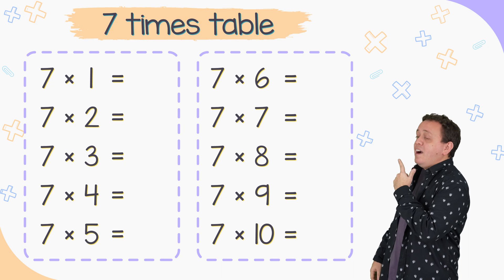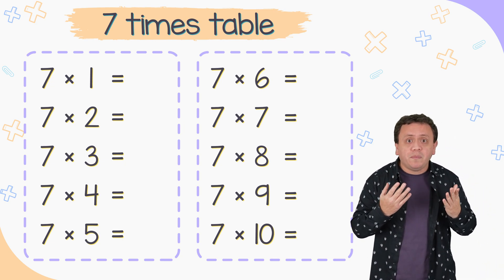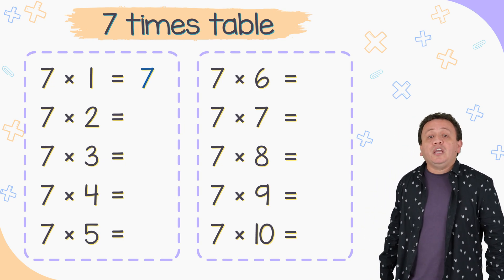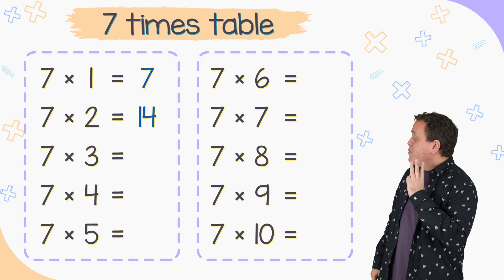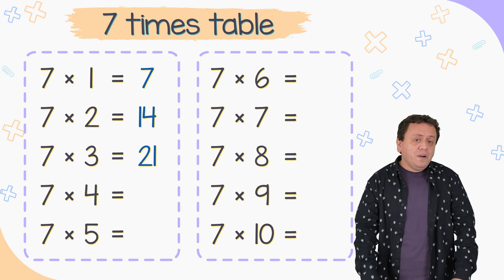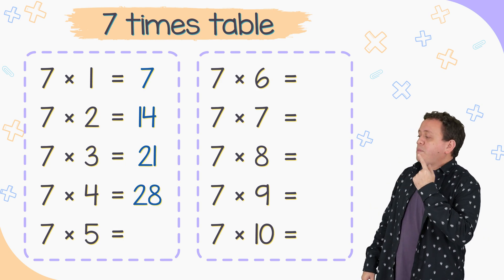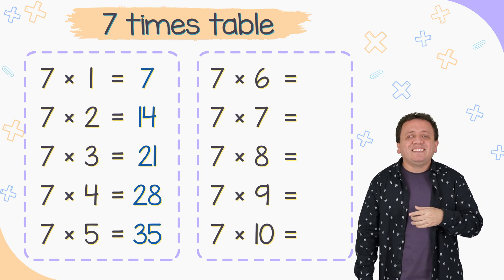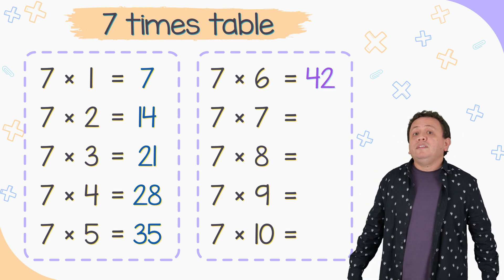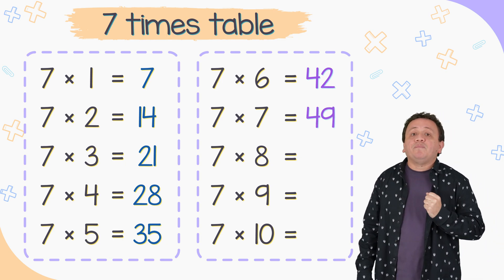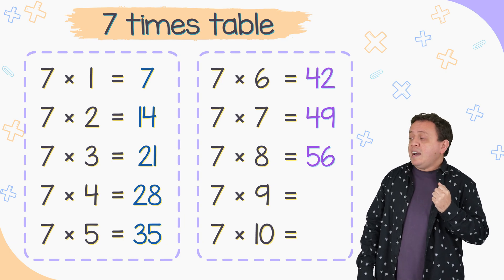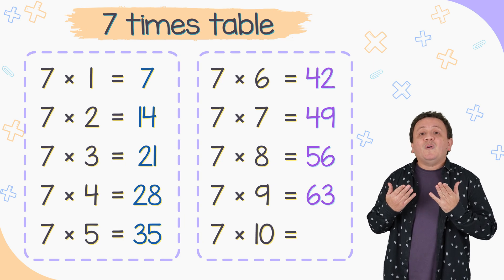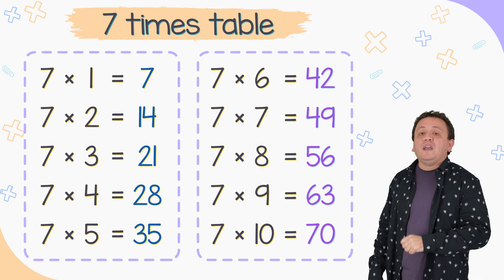My students always say that this is the hardest multiplication table. Pay attention to the 7 times table. 7 times 1 equals 7. 7 times 2 equals 14. 7 times 3 equals 21. 7 times 4 equals 28. 7 times 5 equals 35. 7 times 6 equals 42. 7 times 7 is 49. 7 times 8 equals 56. 7 times 9 equals 63. And 7 times 10 equals 70.